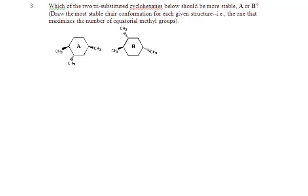In one of those two structures we can get all three equatorial, and in the other one we cannot. But I can't tell at all which is which, the way they're drawn.